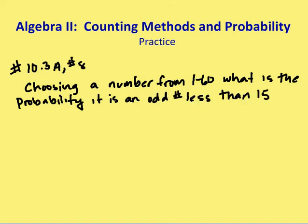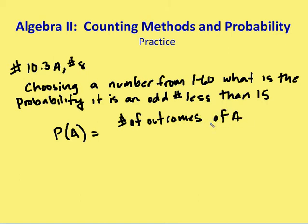Let's choose another problem similar to that. I'm choosing a number from 1 to 60, and I want to find the probability that it is an odd number less than 15. Okay, so remember that the probability of the event is the number of outcomes of that event over the total number of outcomes.